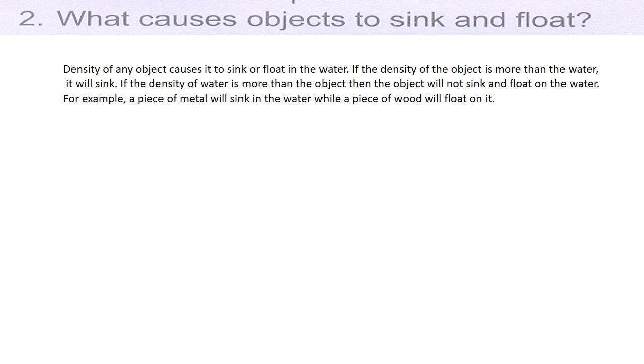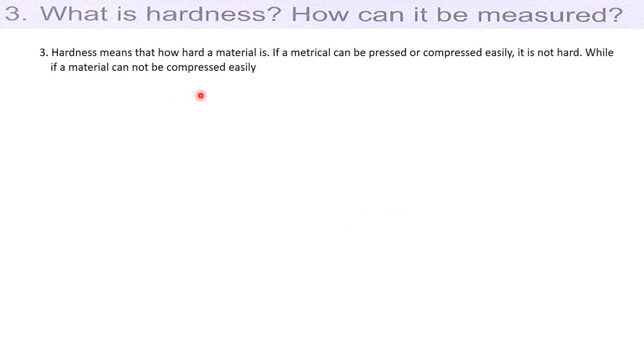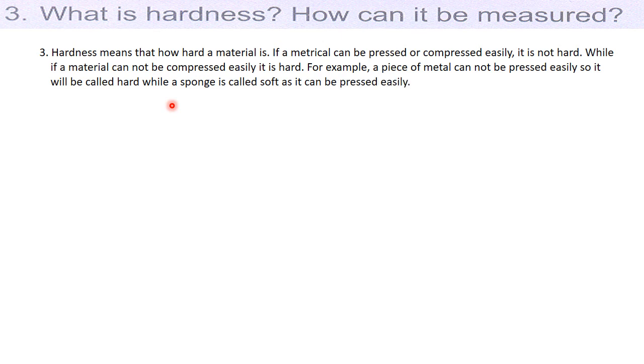What is hardness? How can it be measured? Hardness means how hard a material is. If a material can be pressed or compressed easily, it is not hard. If a material cannot be compressed easily, it is hard. For example, a piece of metal cannot be pressed easily so it will be called hard, while a sponge is called soft as it can be pressed easily.